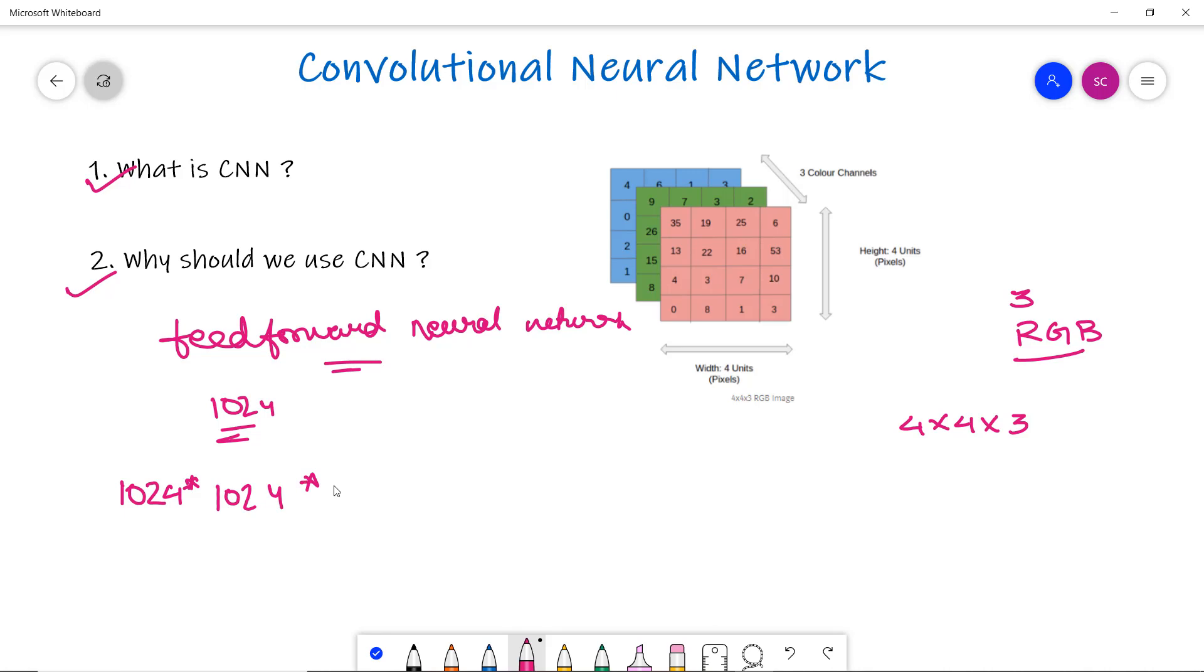The width, height, and color components sum up the weights. This total number of weights is the multiplication of all components. It looks unmanageable. To manage the weights and bias, we use CNN.